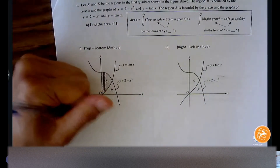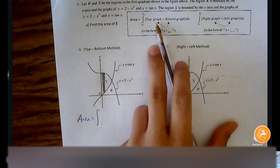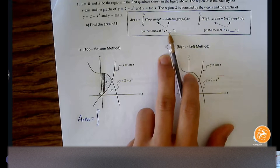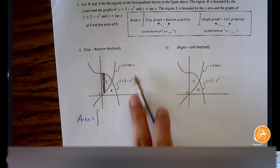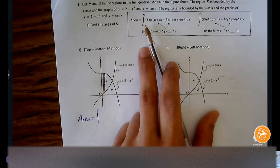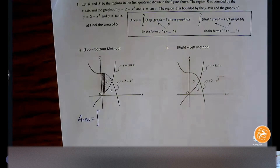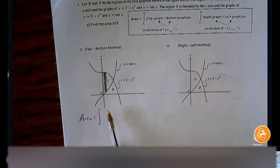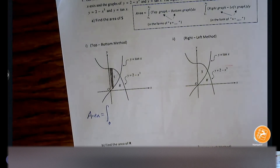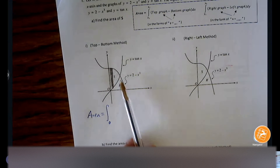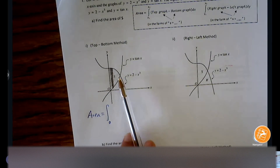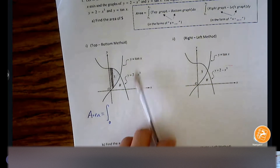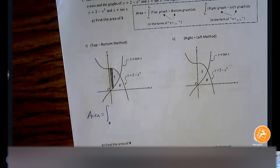Let's identify information and start putting it into the area formula. Area equals... For top minus bottom, all equations must be in the form y =, which every equation we have already is — no adjustments needed. The bounds are x₁ to x₂, so we need x-values. The furthest left x-value of the shaded region is zero. The furthest right is the intersection — we don't know it yet, so we'll leave the upper bound blank and find it with the calculator.